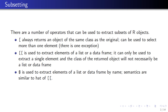The double bracket operator is used to extract elements of a list or a data frame. It can only be used to extract a single element of that object, and the class of the returned object will not necessarily be a list or a data frame. Because lists can hold things of many different classes, when you use the double bracket operator to extract an element of a list, the object that comes back may not be a list — it may be an object of a totally different class.